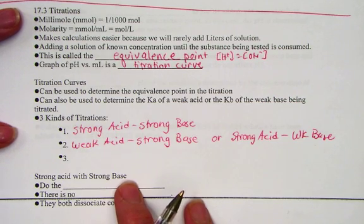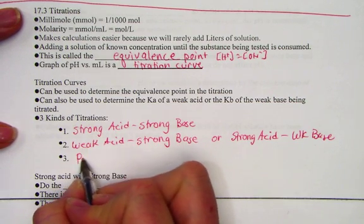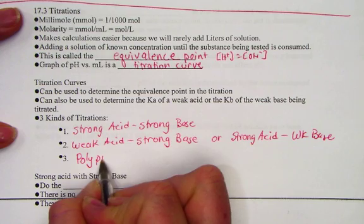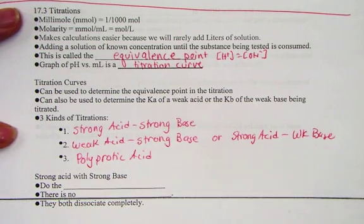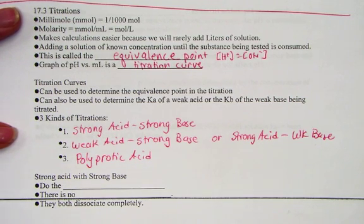And the last type of curve that's unique is coming from a polyprotic acid, where we see the ionization of each proton let go one at a time. Strong versus strong, weak versus strong, and a polyprotic acid all have different looks to their titration curves.